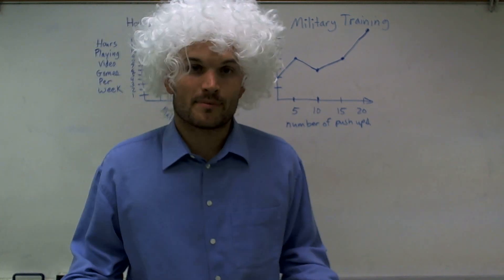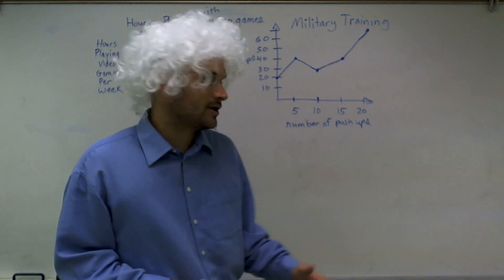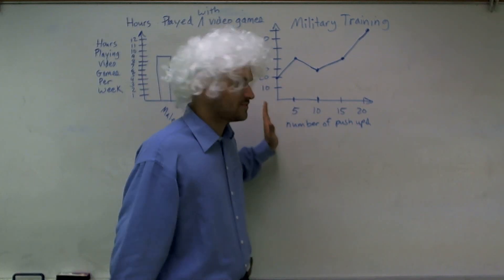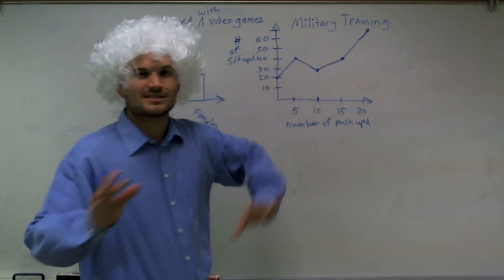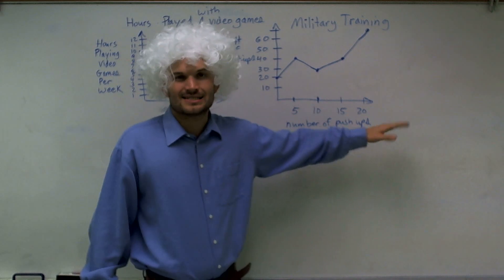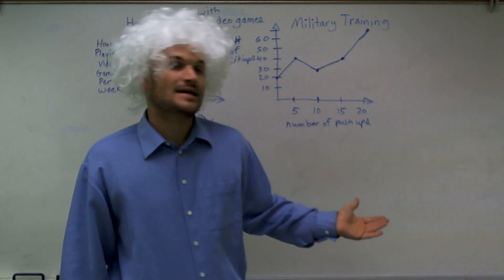So now that we know at least what to expect from a graph, now we need to understand how to read it. There's two things you need to understand. First of all, on a graph we have two axes. We have the x-axis and we have the y-axis. And you'll learn about that a little bit later. But what I want you to do is understand that each one of these axes represents a different part of information.